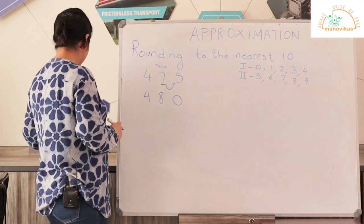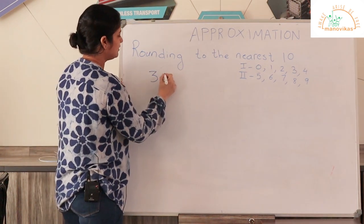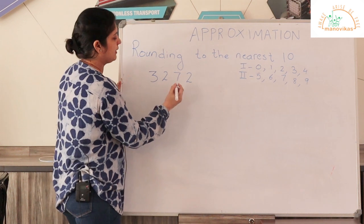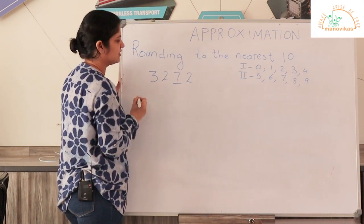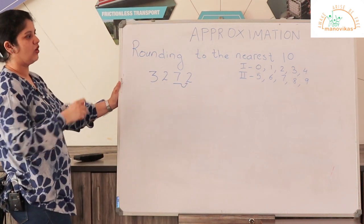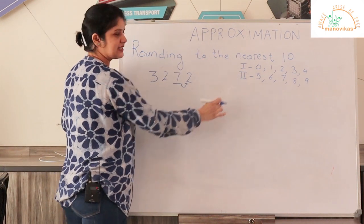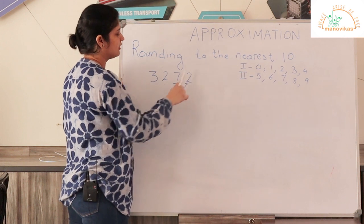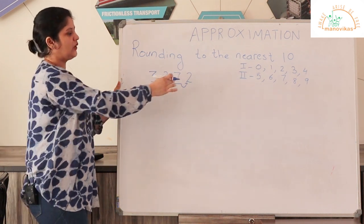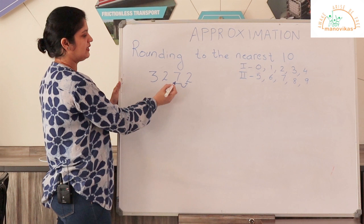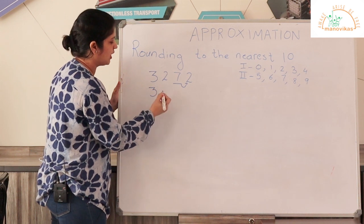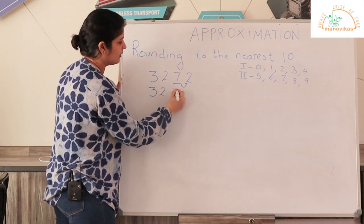Let us take another example. We have the number 3272. We have to round this to the nearest 10. Let me begin by underlining the digit in the tens place, which is 7. The digit following it is 2. I have to check whether it belongs to the first range or the second range. If the digit belongs to the first range, the tens place will not change. Here 2 belongs to the first range, so the tens digit 7 will not change and remain as it is. The number when rounded up will become 3270.